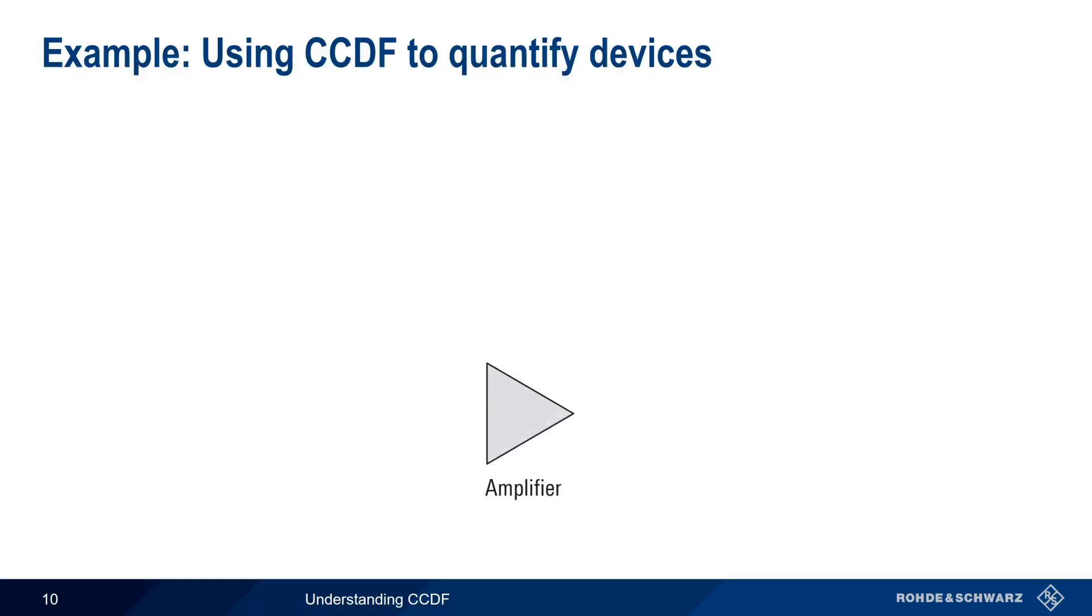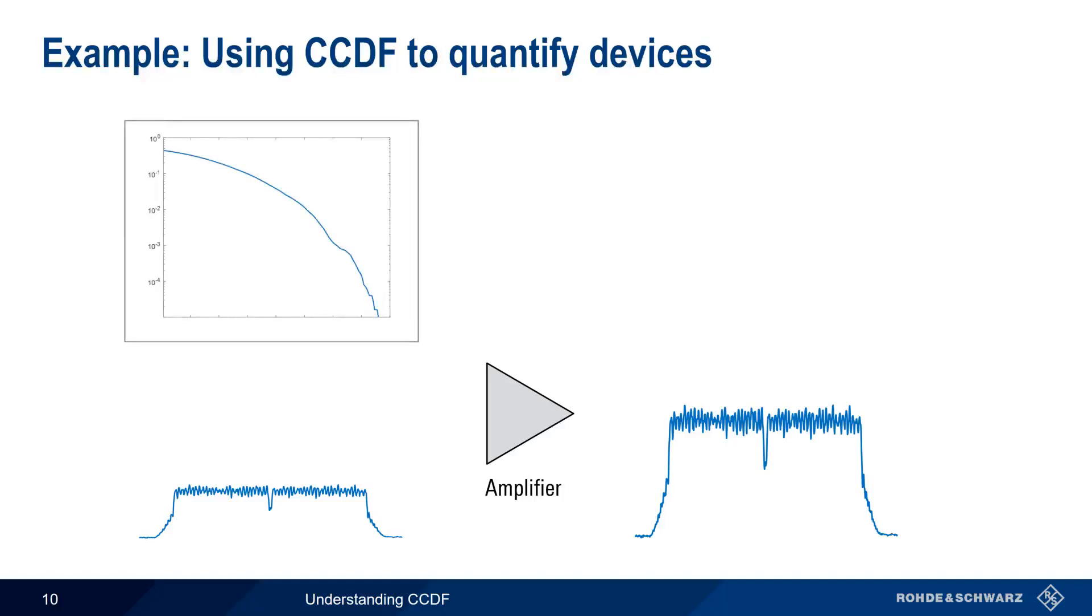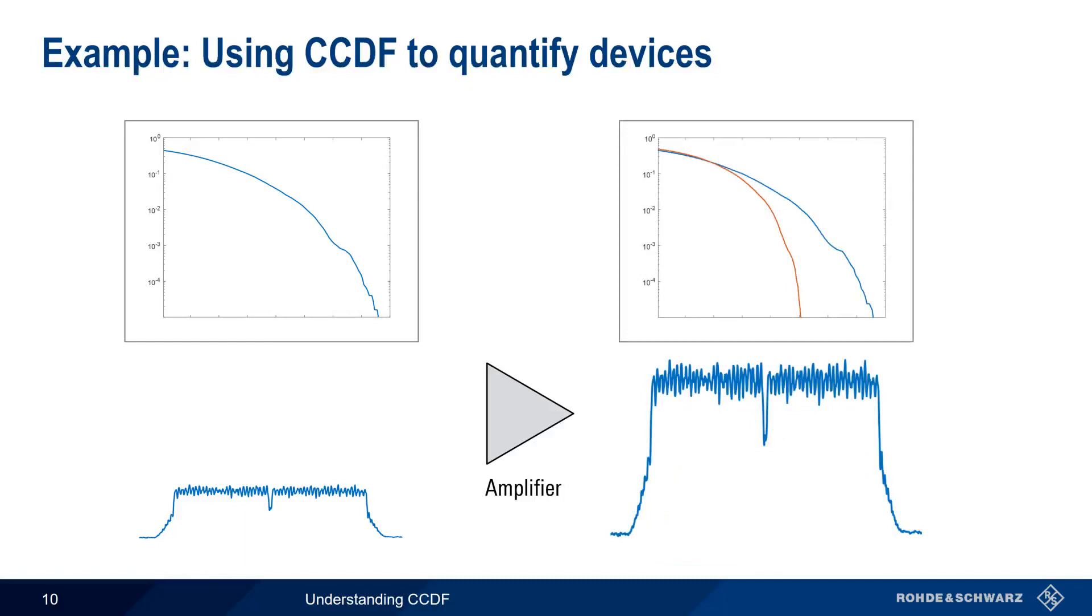In this example, our device under test is a simple amplifier. Ideally, an amplifier would increase the amplitude of the signal without distortion. If the signal is amplified without distortion, the CCDF curves will be approximately the same for both the original signal and the amplified signal. On the other hand, if the amplifier output is distorted, the CCDF curves will be different. In this particular case, the reduction in CCDF between the input and the output signal shows that the amplifier has gone into compression. This same methodology can be used with many other active and passive components as well.